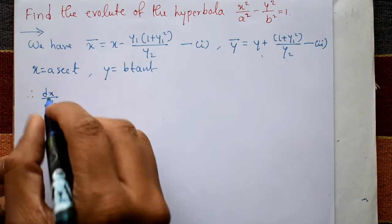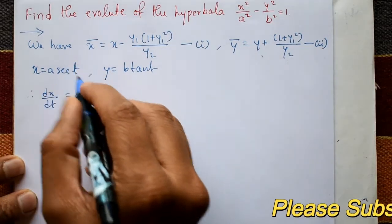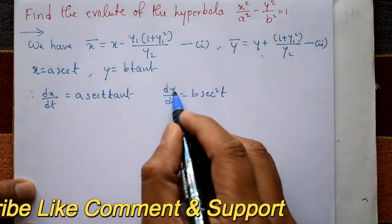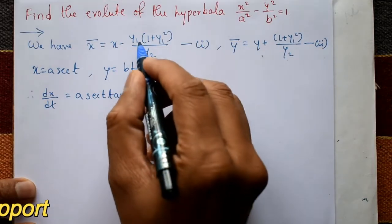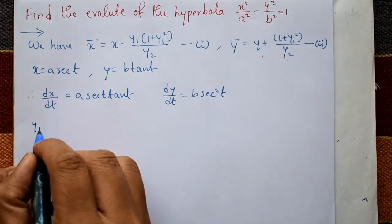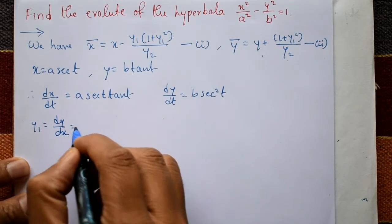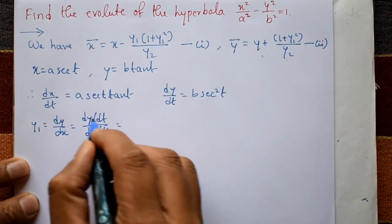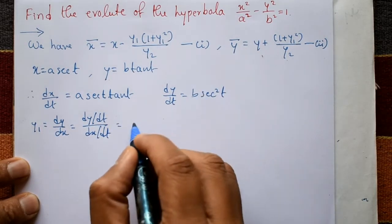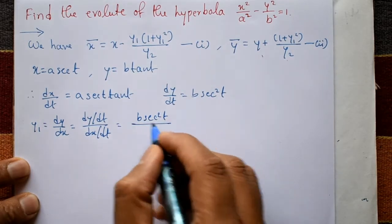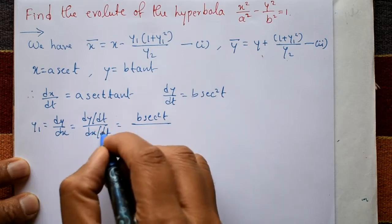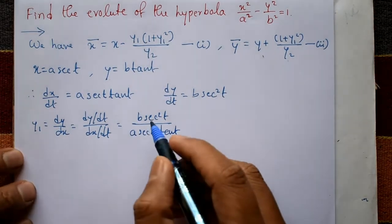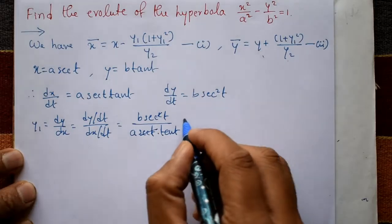Differentiate x with respect to t: dx/dt = a·sec(t)·tan(t), since a is a constant. And dy/dt = b·sec²(t). We need y1 and y2. Now y1 is the first order derivative dy/dx, which means dy/dt divided by dx/dt. So y1 = b·sec²(t) divided by a·sec(t)·tan(t). One sec cancels, giving b/a · (1/tan(t)).